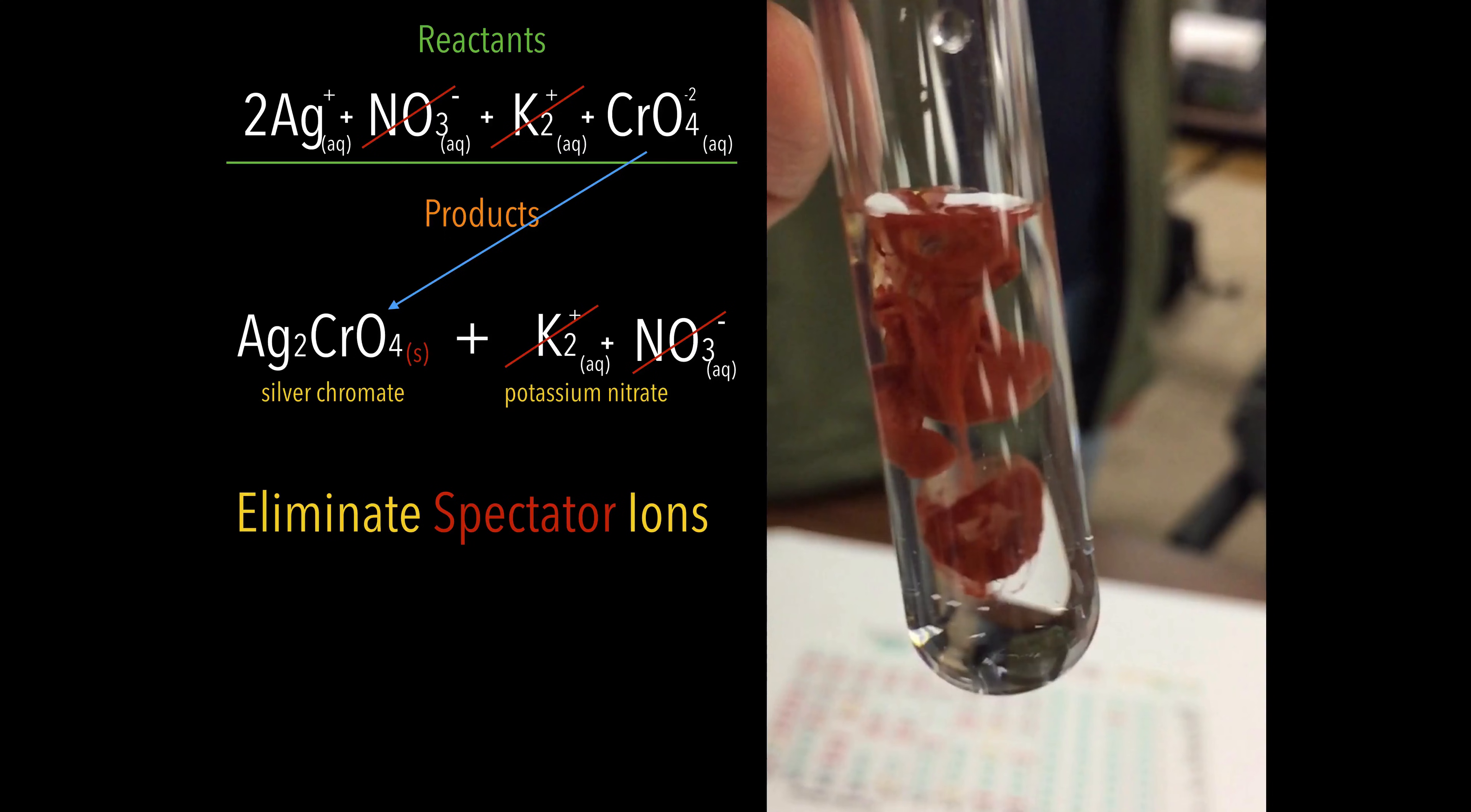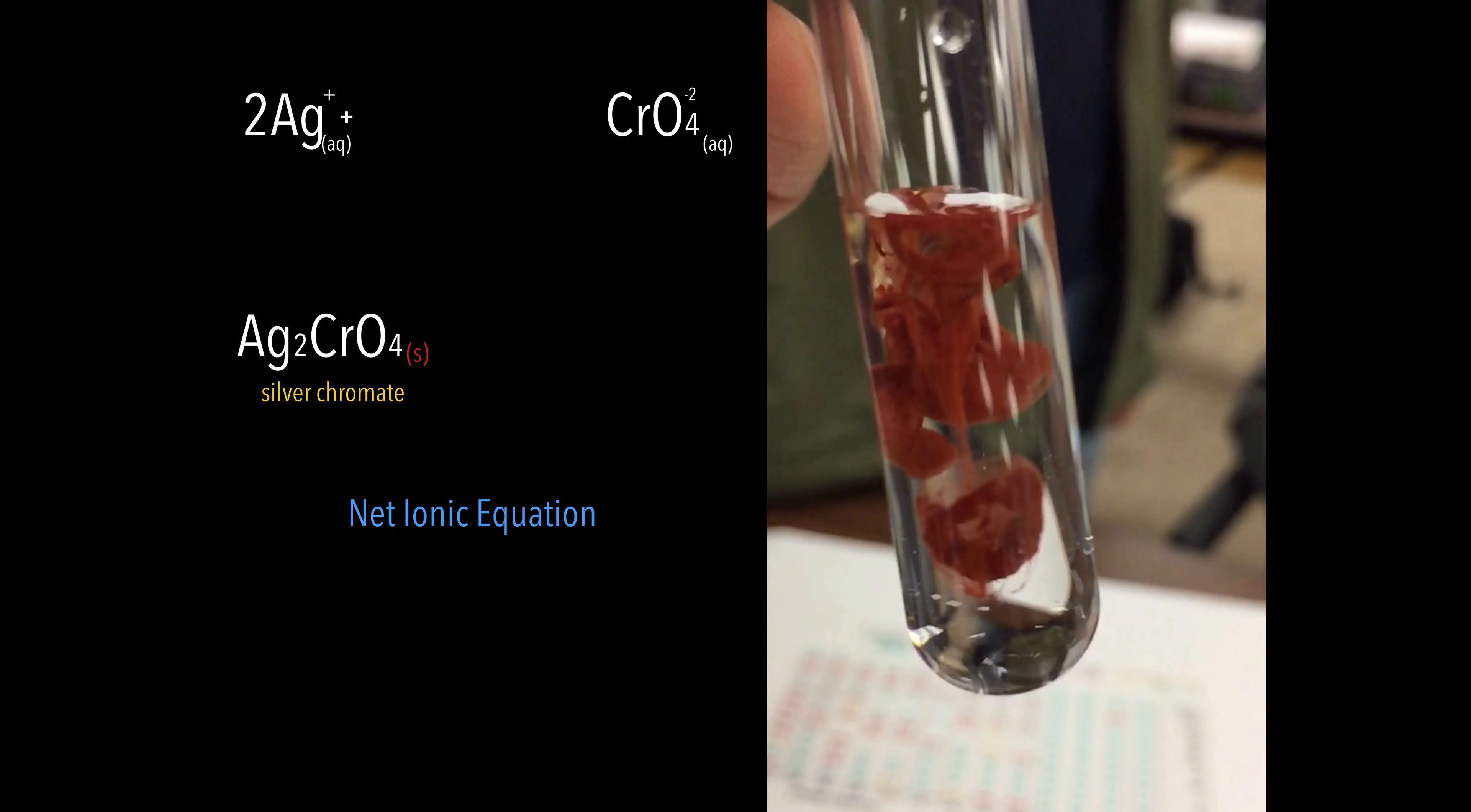My next step is I want to clean this up. I want to eliminate the spectator ions, the ions that were not involved in this reaction. Those are the ones that I have crossed out. So I'm going to erase those. Clean up my equation a little bit.